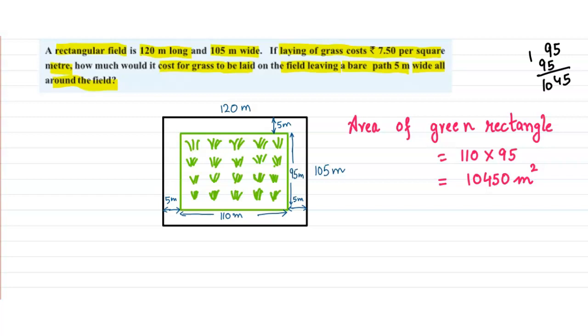1 meter square, laying the grass on 1 meter square costs Rs. 7.5.